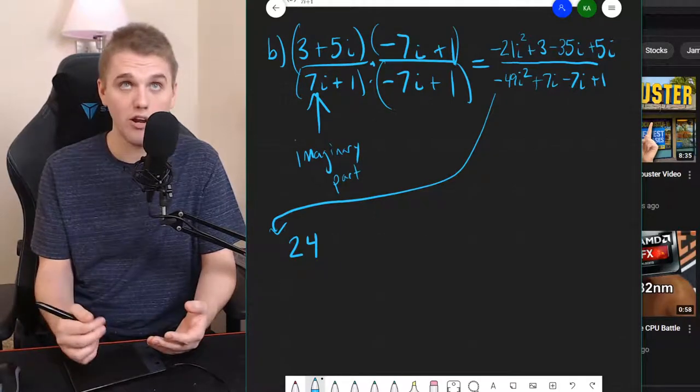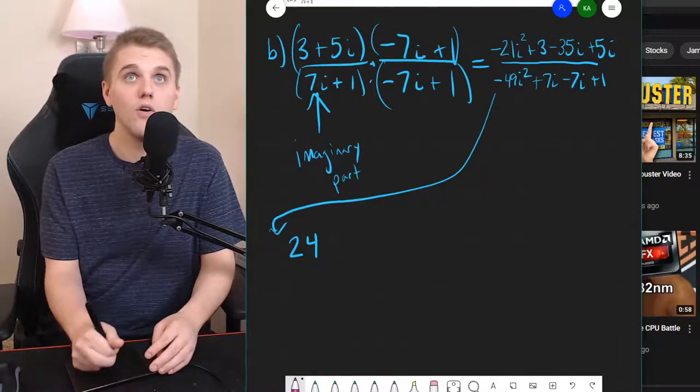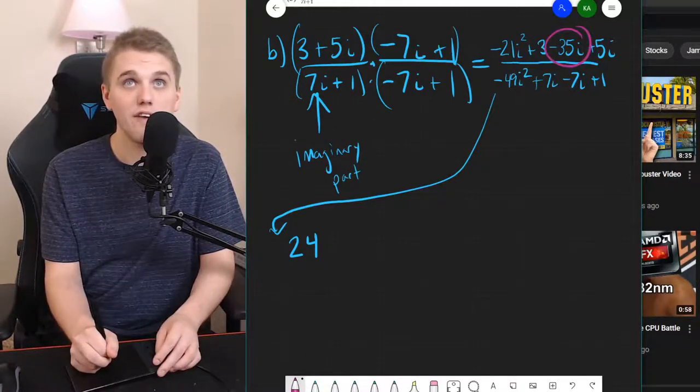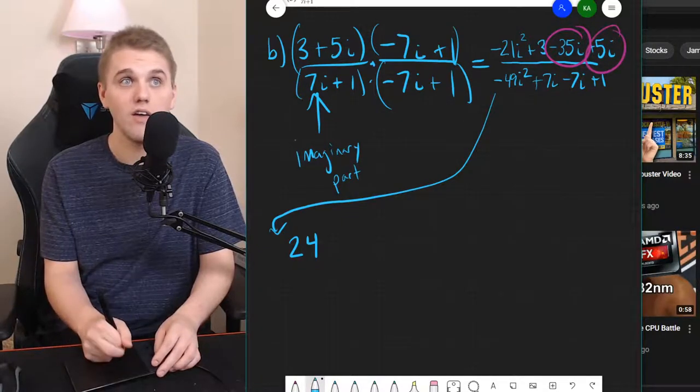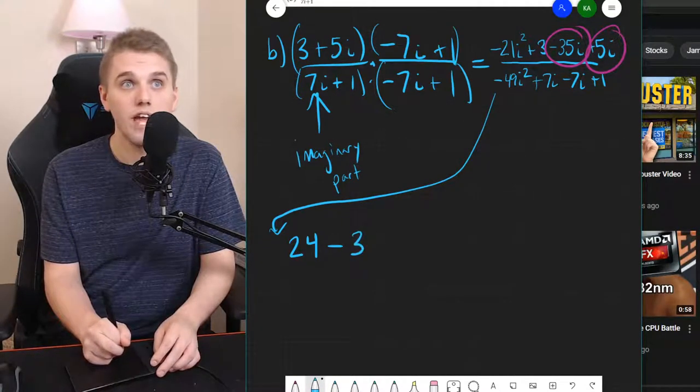What about the imaginary part in the numerator? Well, I see negative 35i plus 5i, which is negative 30i.